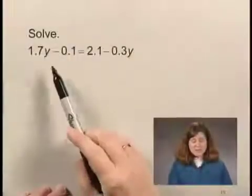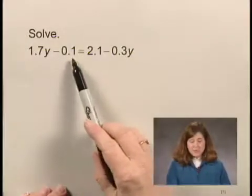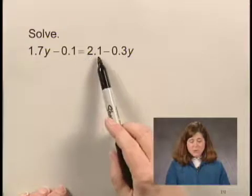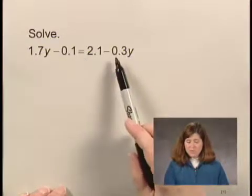In this exercise, we'll solve an equation that contains decimal numbers. The equation is 1.7y minus 0.1 equals 2.1 minus 0.3y.